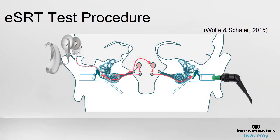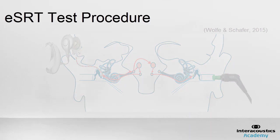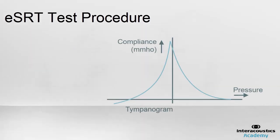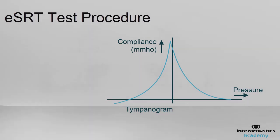While the reflex can be obtained both ipsilaterally and contralaterally, it is recommended to measure the ESRT contralateral to the implant. As with traditional reflex measures, it is recommended to check the middle ear functionality prior to reflex measurement. Therefore, it is recommended to include tympanometry as part of the protocol.